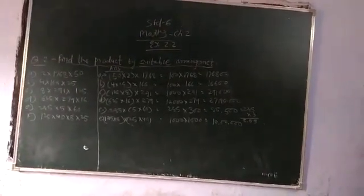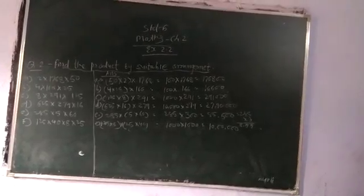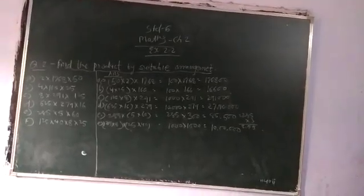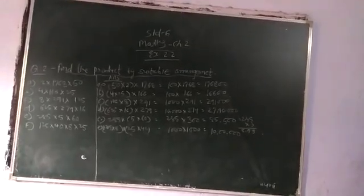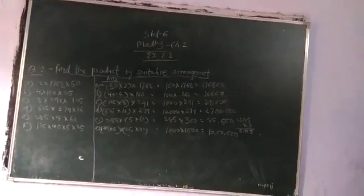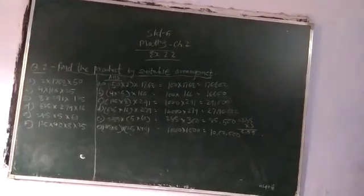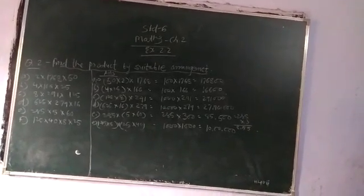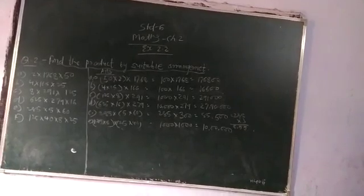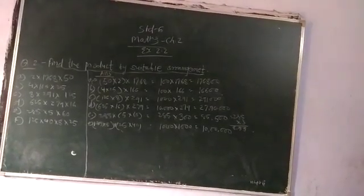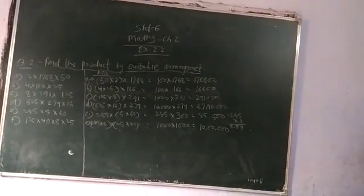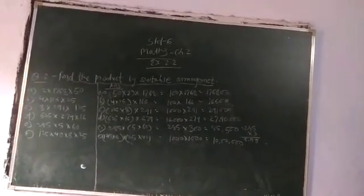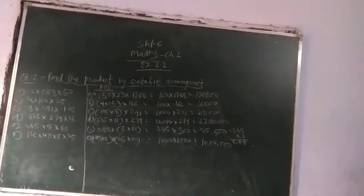We have to arrange it so that we don't have to multiply in a difficult way. We have to arrange it in an easier way. So the first figure is 2 x 1,768 x 50. If we solve it directly, then it is a difficult way. But when we have to arrange it...